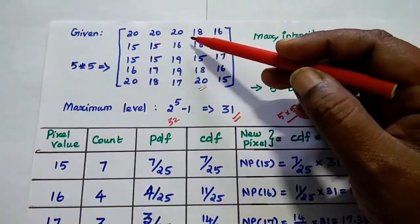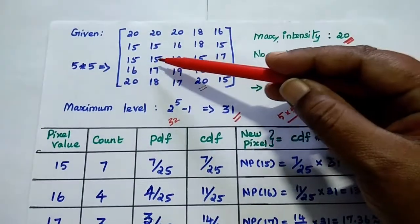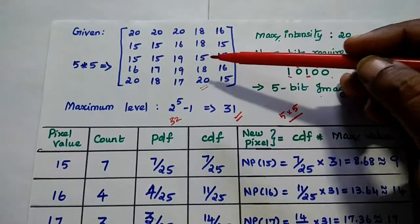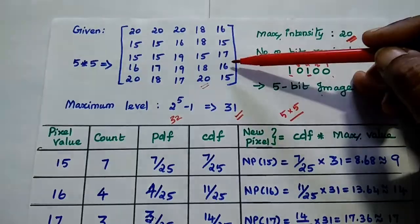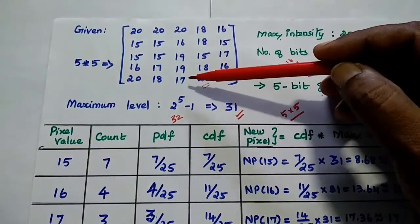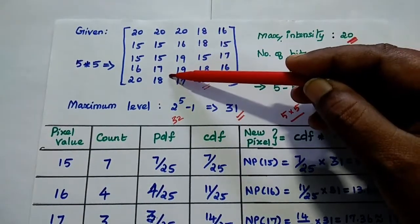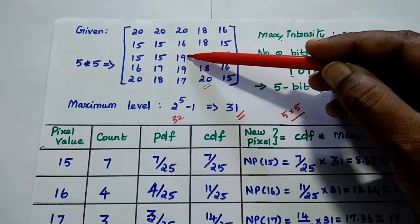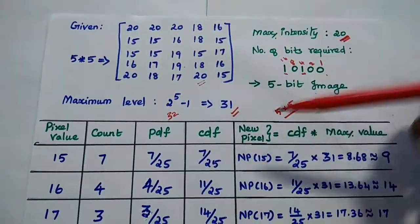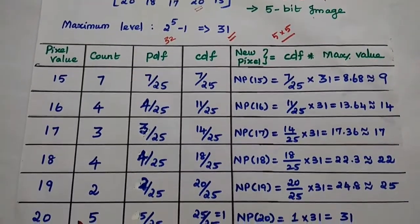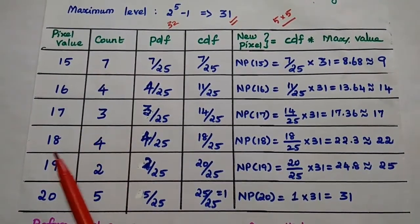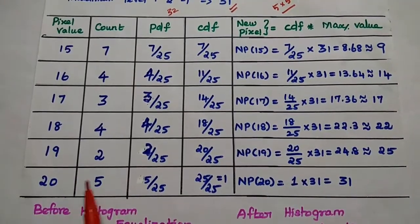Counting from the image segment: there are 7 occurrences of 15, 4 occurrences of 16, 3 occurrences of 17, 4 occurrences of 18, 2 occurrences of 19, and 5 occurrences of 20. The total is 25 pixels.